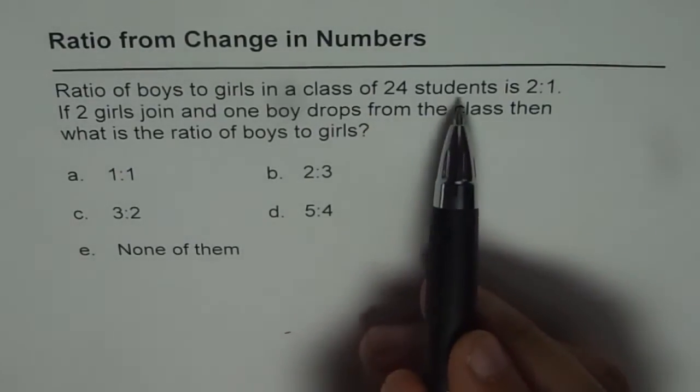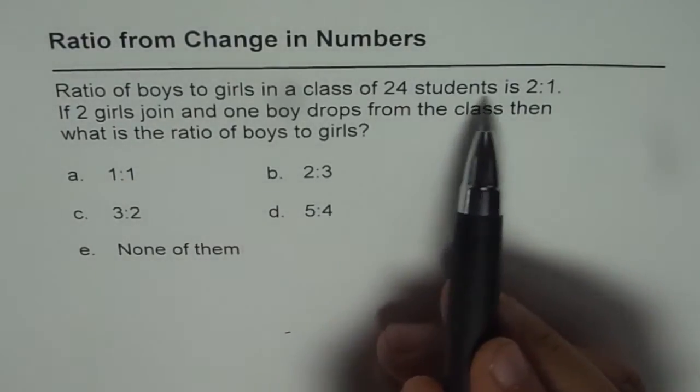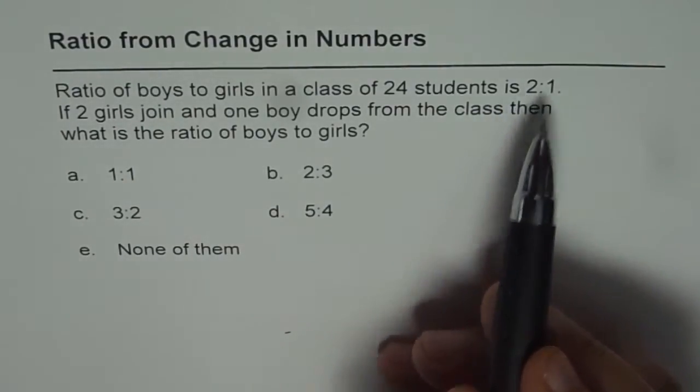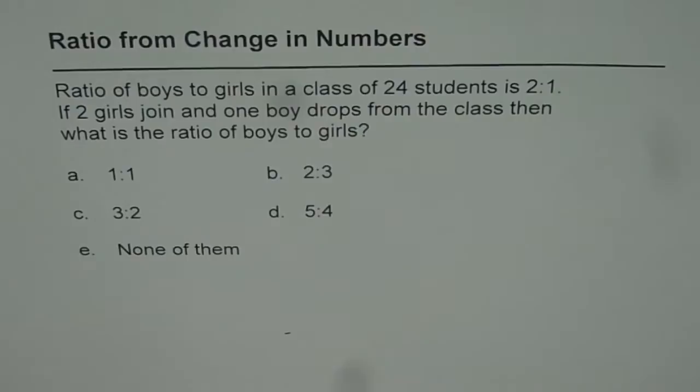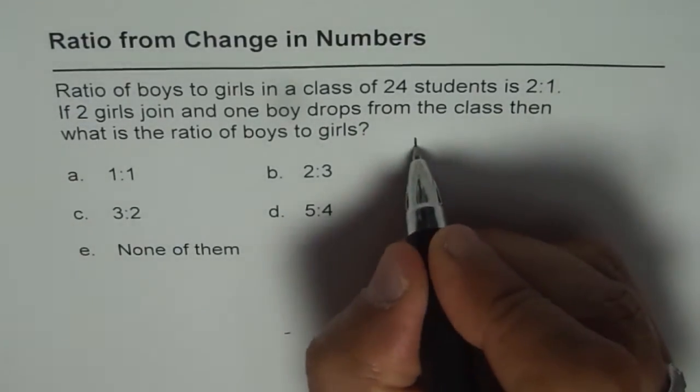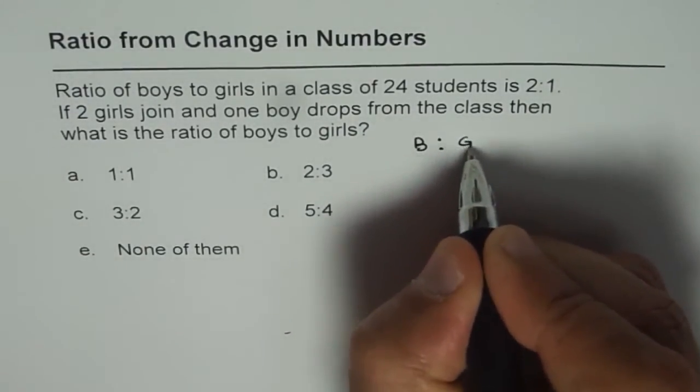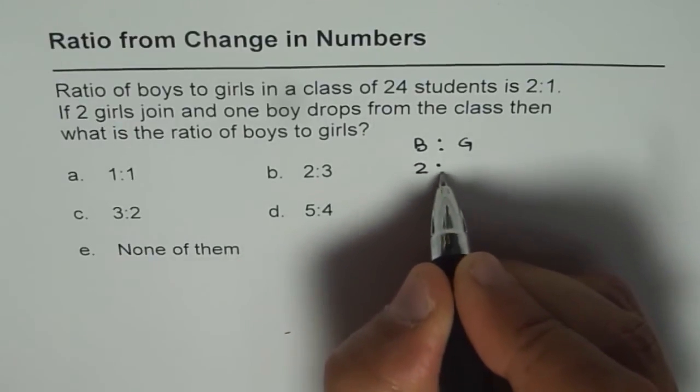Well, when we say there are 24 students and the ratio of boys to girls is 2 to 1, let's first find how many boys and how many girls are there. So what we have here is boys to girls, that is the ratio which is 2 to 1.